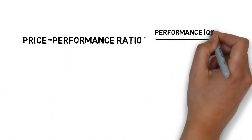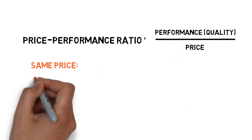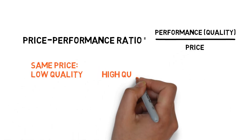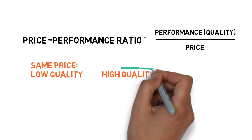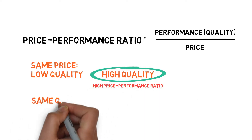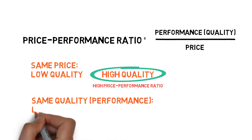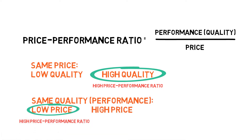The price-performance ratio is the ratio between the performance of an item and its price. For two similar items having the same price, the higher quality one will have a higher price-performance ratio. Conversely, for two items having the same quality, the one with the lower price will have a higher price-performance ratio.